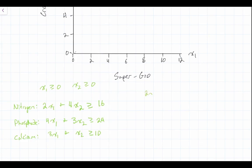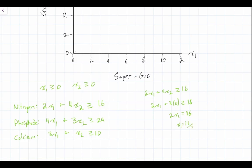For the nitrogen constraint: 2x1 plus 4x2 must be greater than or equal to 16. To find where it intercepts the x1 axis, we set x2 equal to 0. So 2x1 plus 4 times 0 is equal to 16, which means 2x1 equals 16, so x1 equals 16 divided by 2, giving us x1 equals 8. We plot this point on our graph — when x2 equals 0, x1 equals 8.